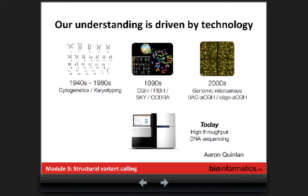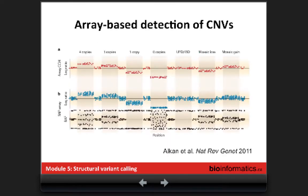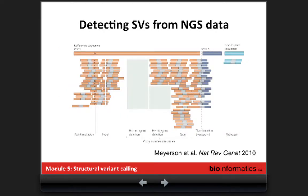The techniques to detect structural variants have evolved. About 60 years ago we were doing karyotyping, then FISH, then we started to do microarrays especially for copy number variation, and now we are at the level of high-throughput sequencing and high resolution. The more the technology evolves, the more information and signals you get, so you can detect more complex types of events — but it's more complicated to do the variant calling.